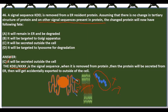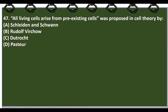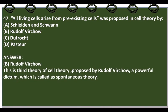All living cells arise from pre-existing cells — this was proposed in cell theory by Rudolf Virchow. This is the third postulate of the cell theory; the first two were proposed by Schleiden and Schwann. Rudolf Virchow called it the spontaneous theory.